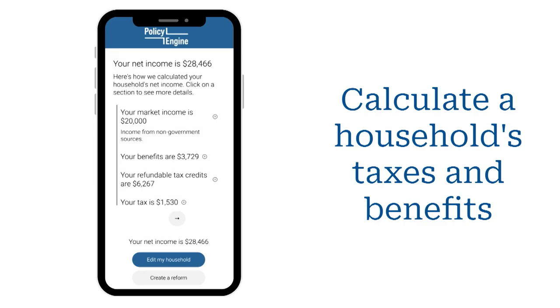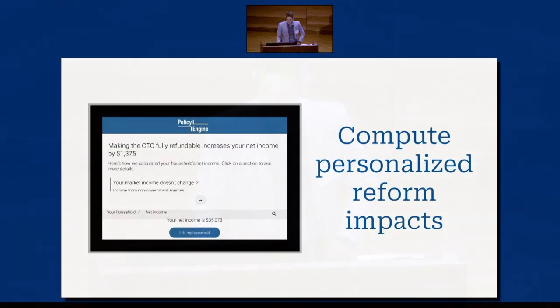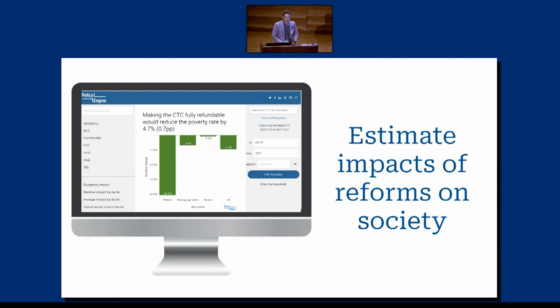So what can you do with Policy Engine? If you're an individual, you can enter some information about yourself and we'll calculate your taxes and your benefits. If you're a policy analyst, you can design a custom policy reform — tweak any of the knobs that influence the design of those policies, potentially introduce a new policy. Once you've done that, you can compute the impact on a household of that reform. We have a micro-simulation model similar to what CBO has that estimates the impact of reforms on society overall: how much it's going to cost, who wins, who loses, what effect it has on the poverty rate, on income inequality, and so on.